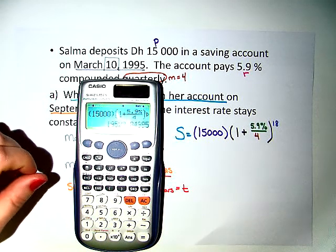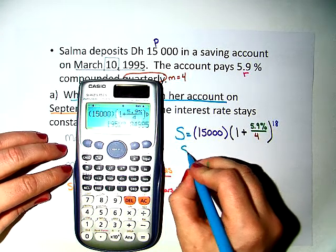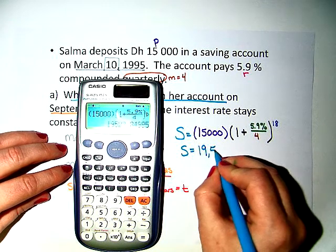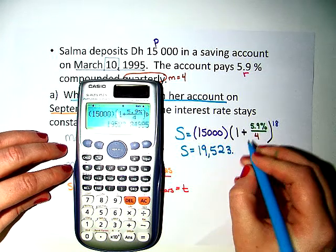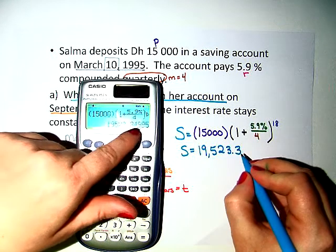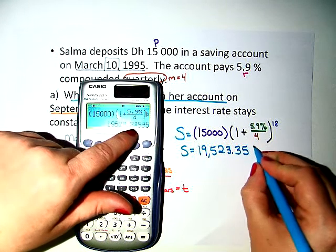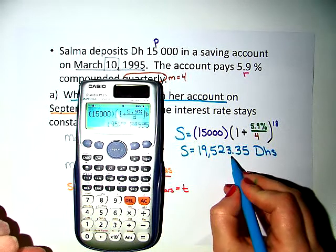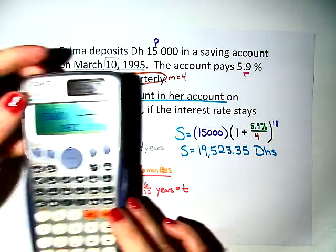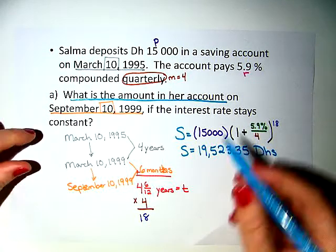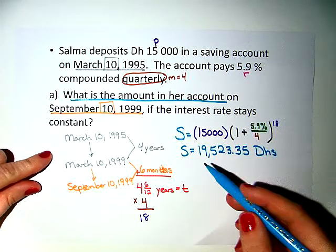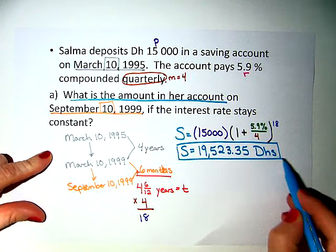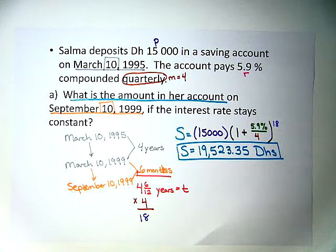What should finally be in her account after those 4 and a half years is 19,523 dirhams and 35 fills. This is how you involve not only time, but maturity amount for compound interest.